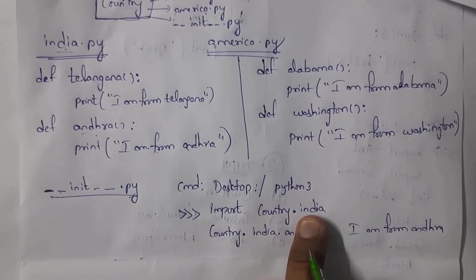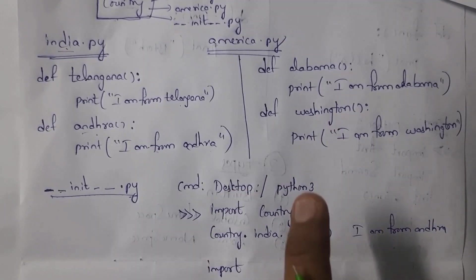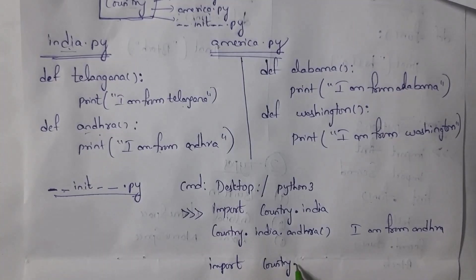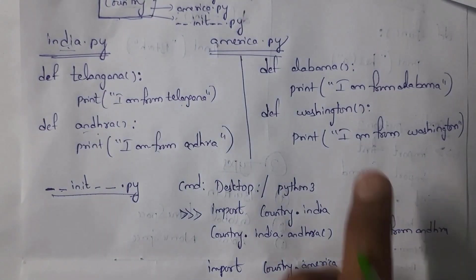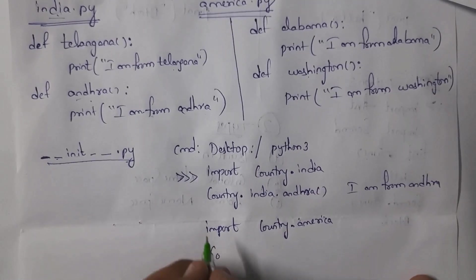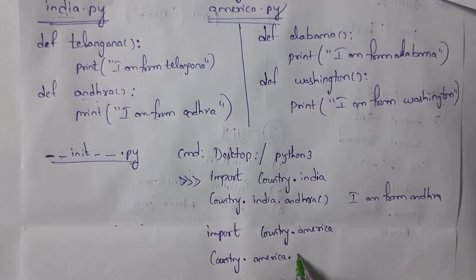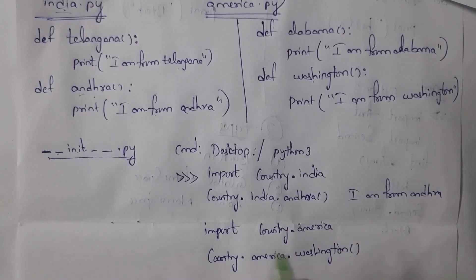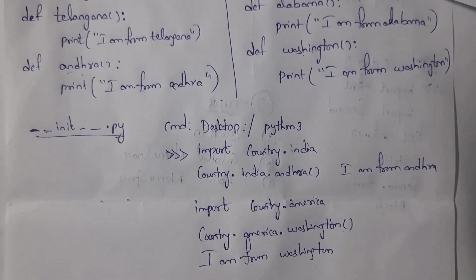For example, to print 'I am from Washington', first import the package and module by writing: import country.america (don't write .py, just write america). Then write: country.america.washington() — include brackets at the end. When you run this and press Enter, you will get the output: 'I am from Washington'. Whenever you get a package question in an exam, you can use this example.